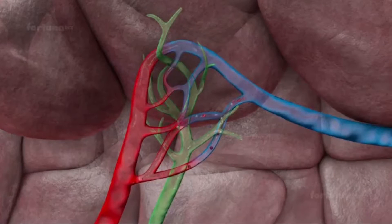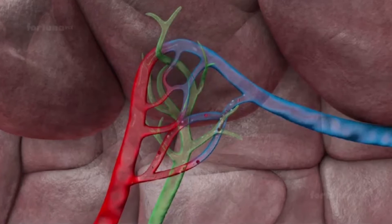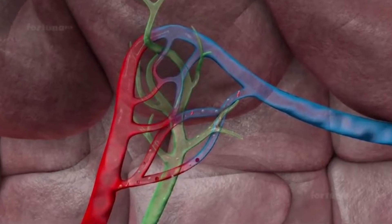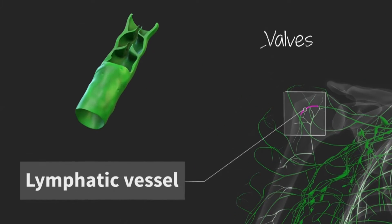Unlike blood, the lymphatic fluid is not pumped but squeezed through the vessels when we use our muscles. The properties of the lymph vessel walls and the valves help control the movement of lymph.